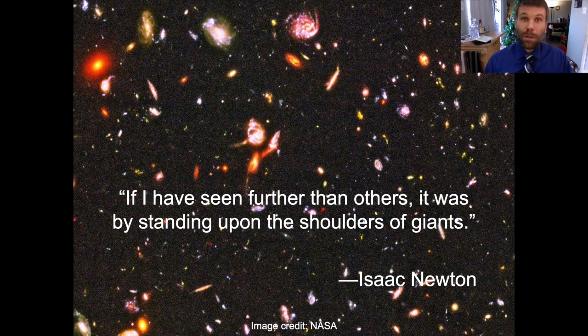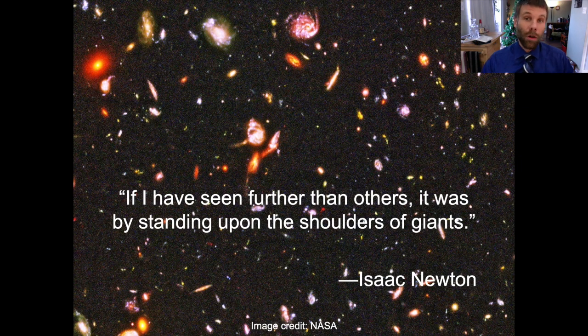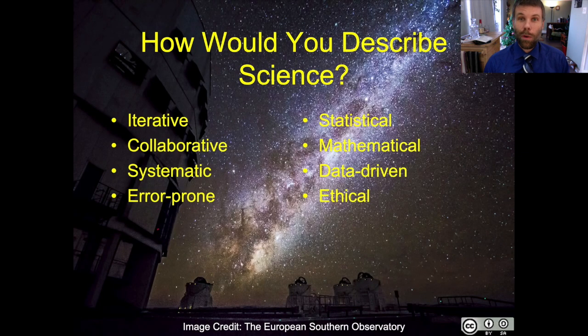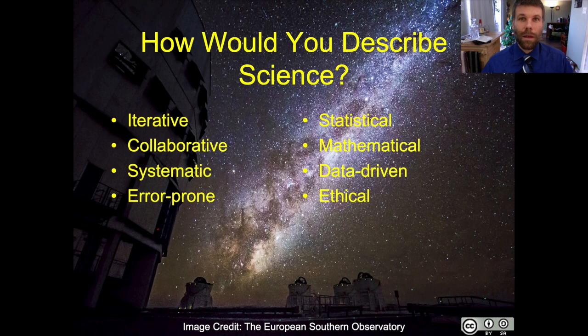One of the things that we have to do is do that due diligence, both on our own work and on our contemporaries. So that's why, in the previous slide, I chose the word error-prone. Humans make mistakes. One of the values of the scientific process is it gives us a tool to identify those mistakes and correct them systematically.